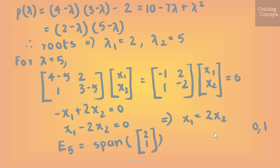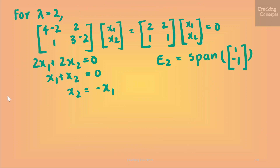Since in the definition we already set that we are not looking at the zero vector, we substitute 1 in x1 and x2 and see what corresponding values we get. Thus we get the eigenspace E_5 as the span of the vector [2, 1]. Similarly for lambda = 2 we get the equation x2 = −x1. Substituting the value of 1 in each, we get the eigenspace E_2 as the span of the vector [1, −1]. These two eigenspaces are one-dimensional as they are each spanned by a single vector. However in other cases we may have multiple identical eigenvalues and the eigenspace may have more than one dimension.